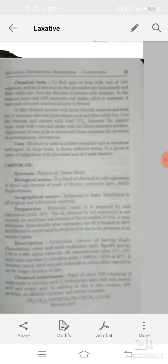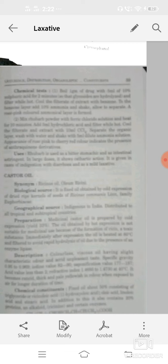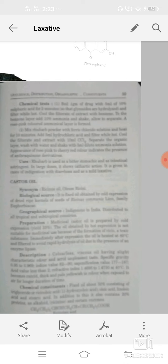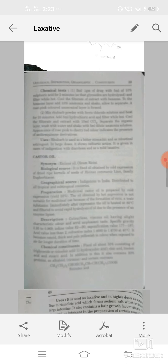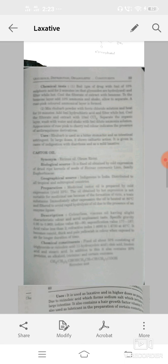Description: colorless viscous oil having slight characteristic odor or unpleasant taste. Specific gravity 0.95 to 0.969, iodine value 82 to 90, saponification value 177 to 187. Chemical constituents: it consists of about 50% of triglyceride or ricinoleic acid, oleic acid, linoleic acid, stearic acid, or also contain 20% protein or alkaloid ricinin or certain enzymes.